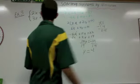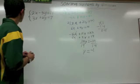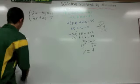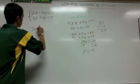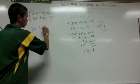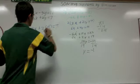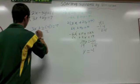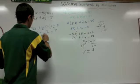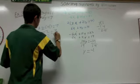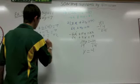Now we go back and plug in y. So we have 3x plus 2 times negative 1 equals 7. So negative 2 plus 3x equals 7, and then you're going to add 2 to both sides.